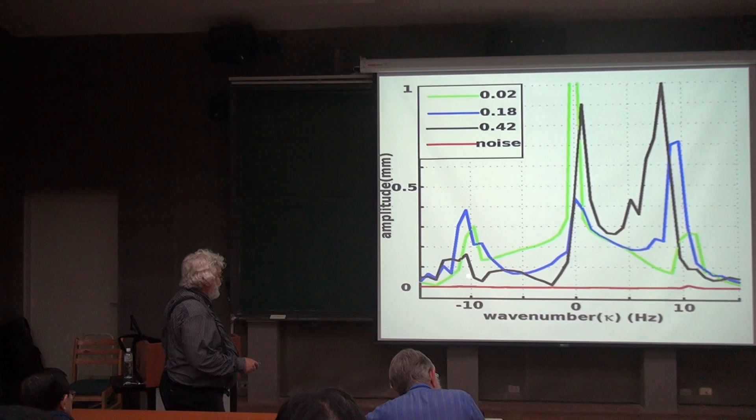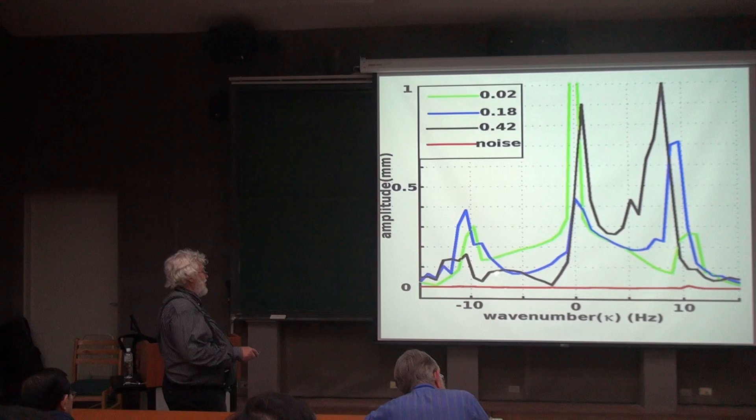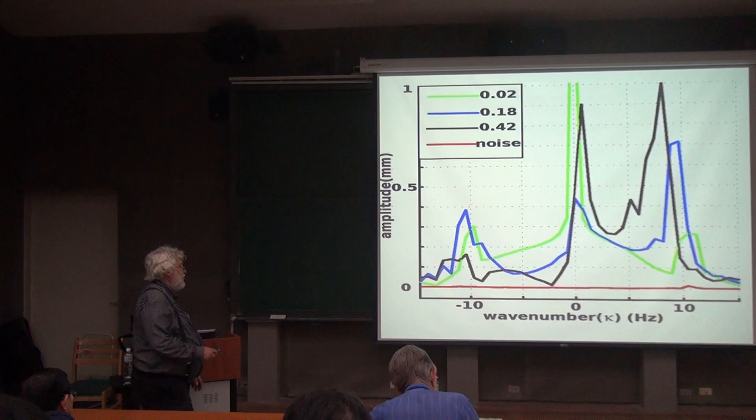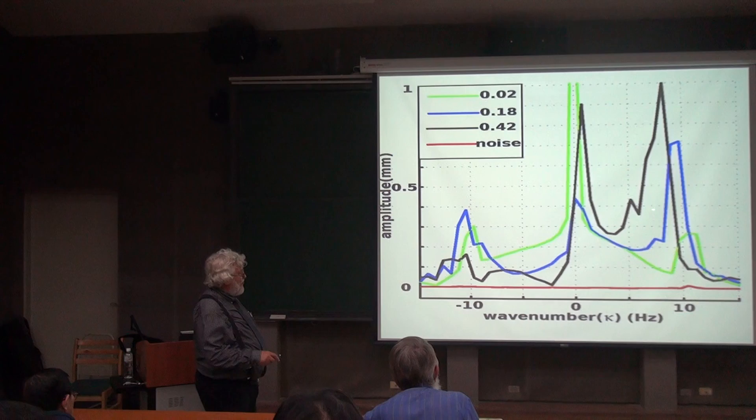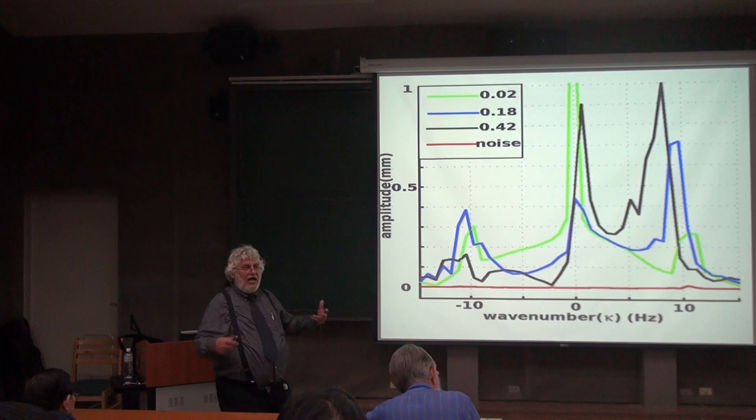There's negative wave number waves. These turn out to be, in the so-called Bogoliubov analysis, the so-called negative norm or negative frequency waves. These are the positive frequency waves. And the ratio between this and this tells us how many particles would be created if this were a quantum system.